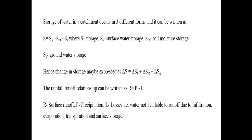Storage of water in a catchment occurs in three different forms, written as S equals Ss plus Sm plus Sg, where S is total storage, Ss is surface water storage, Sm is soil moisture storage, and Sg is groundwater storage. Hence, change in storage may be expressed as delta S equals delta Ss plus delta Sm plus delta Sg.